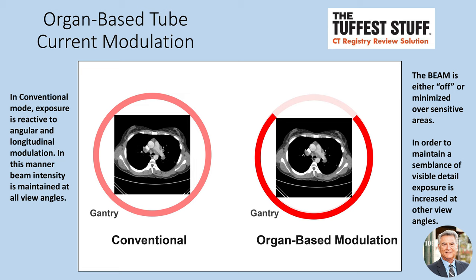When we look at organ-based tube current modulation, the beam is either off or very much minimized over sensitive areas. In order to maintain a semblance of visible detail, beam intensity and therefore exposure has to be increased at other view angles. That's why the diagram shows a darker red in the area where exposure is taking place, while over the anterior surface — the sensitive areas — there is either no exposure or very little exposure.